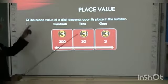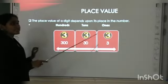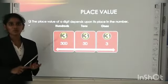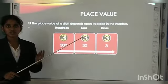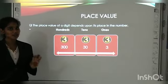Place value. The place value of a digit depends upon its place in the number. You already know what digits are: zero, one, two, three, four, five, six, seven, eight, nine. These are digits.